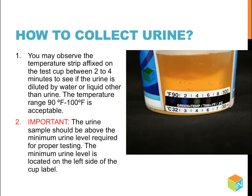Observe the temperature strip affixed on the test cup between 2 to 4 minutes to see if the urine is diluted by water or liquid other than urine. The acceptable temperature range is 90 to 100 degrees Fahrenheit. It's important to remember that the urine sample should be above the minimum urine level required for proper testing, located on the left side of the cup label.